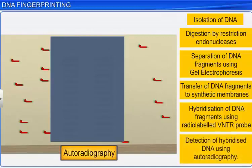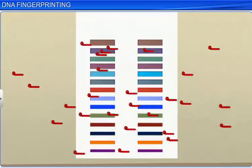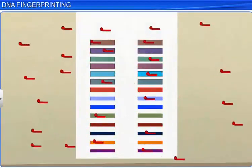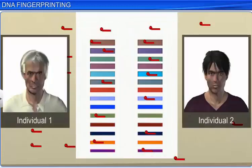Hybridization with the VNTR probe results in an autoradiogram, which produces several bands of different sizes. These bands provide a characteristic pattern to an individual's DNA, and vary from one individual to another, except in identical or monozygotic twins.